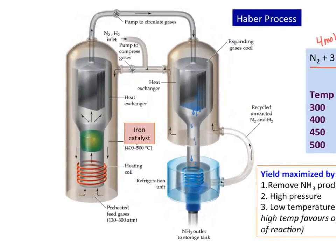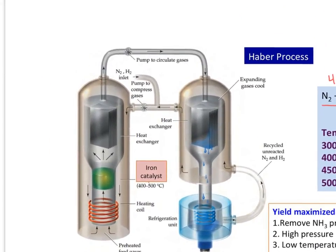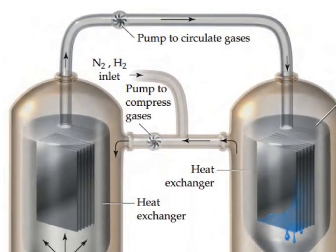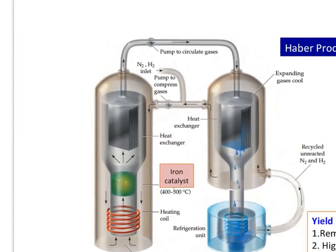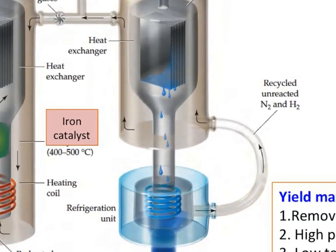Let's look at what's going on inside the reaction chamber. They have an inlet where the gases — nitrogen and hydrogen — come in, and they compress that. It goes into the reaction chamber where there's a catalyst and a heating coil. Those gas particles are colliding really quickly, lots of reaction is happening, and we're producing a lot of ammonia. All the gases, including the ammonia product, go over to the compression chamber.